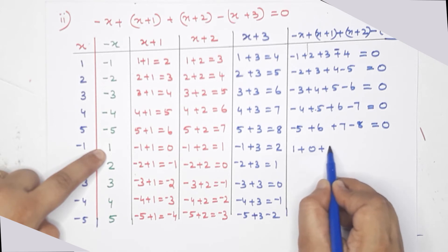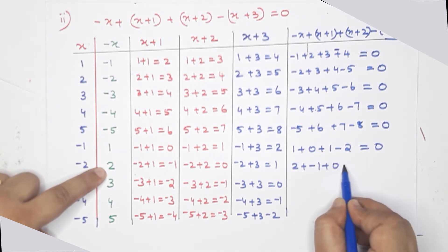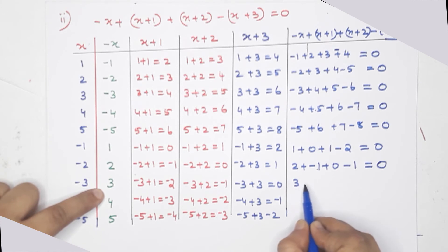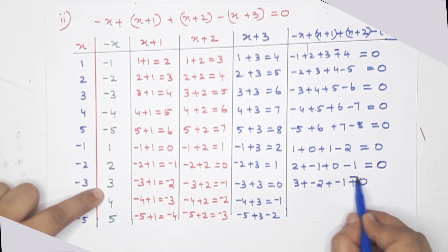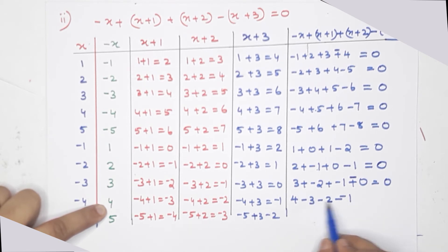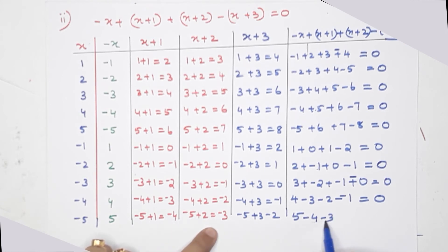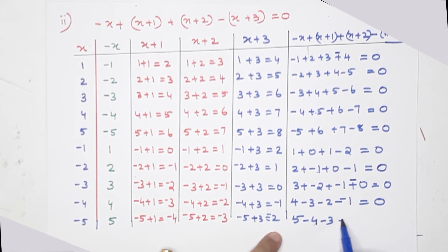For negative x values: negative 1 plus 0 plus 1 minus 2 gives 0. Two plus negative 1 plus zero minus 1 is negative 2. Three plus negative 2 plus negative 1 plus zero equals 0. Four minus 3 minus 2 minus minus 1: we get 5 minus 4 minus 3, then minus 2 of minus 2 gives minus of minus plus 2, so 7 minus 7 equals 0.